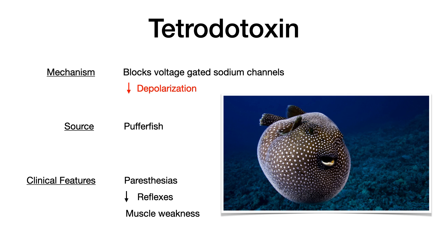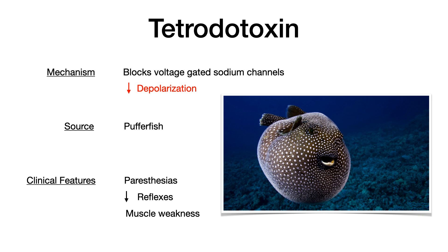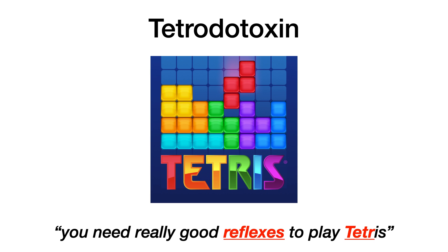If you don't want to memorize all this, here's a mnemonic: 'tetro' sounds like Tetris, and when I think about Tetris I think you need really good reflexes to play it. That reminds me that in tetrodotoxin you see decreased reflexes. And taking it further — what mechanistically causes decreased reflexes? Something that causes action potentials to fire less, i.e., something that blocks voltage-gated sodium channels.